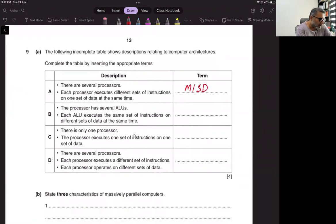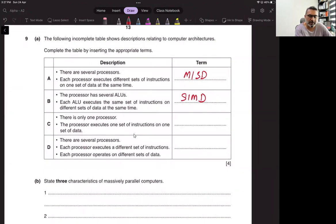The processor has several ALUs. Each ALU executes the same set of instructions on different sets of data at the same time. So single instruction, multiple data. This is your graphic cards. There is only one processor. The processor executes one set of instructions: single instruction, single data.